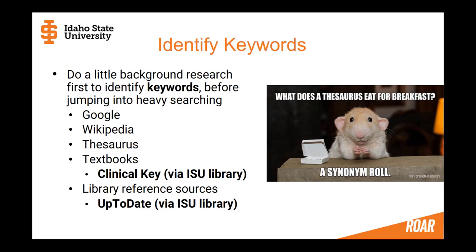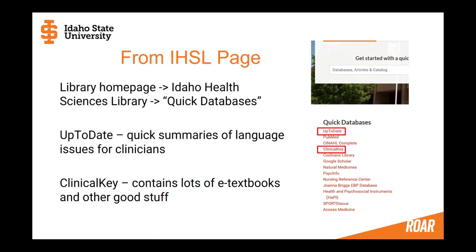If you go to thesaurus.com and put in children, you'll get synonyms like youths, infants, teenagers, primary school. For medical concepts, it's a great idea to refresh your memory with a textbook — Clinical Key via the ISU library is a great source of textbooks. There are also medical reference sources the library provides, including an important one called Up-to-Date. All of these are accessible off-campus using your Bengal ID number and last name. I'll do a demo starting from the Idaho Health Sciences Library homepage.